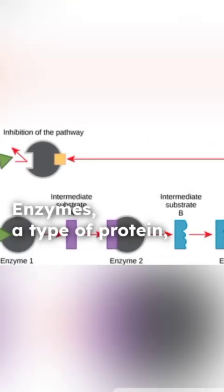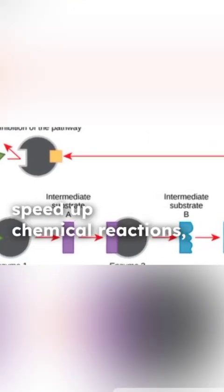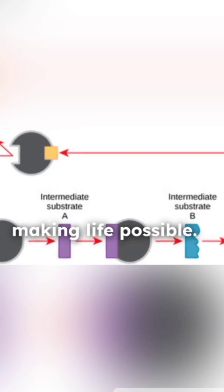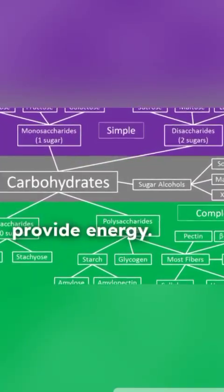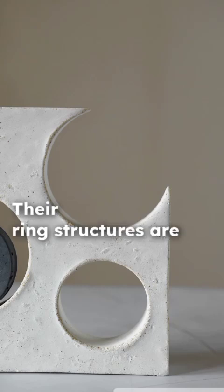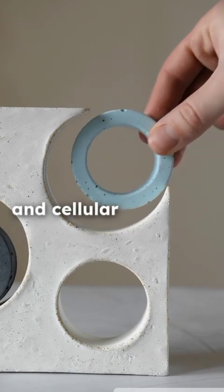Enzymes, a type of protein, speed up chemical reactions, making life possible. Carbohydrates, like sugars and starches, provide energy. Their ring structures are essential for energy storage and cellular communication.